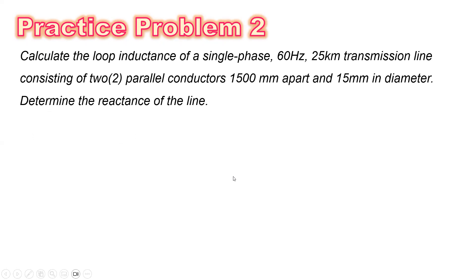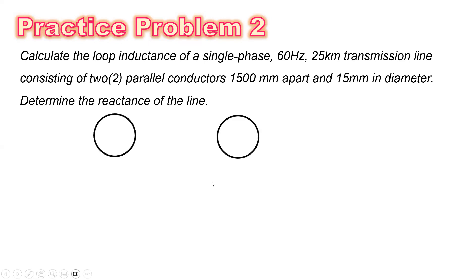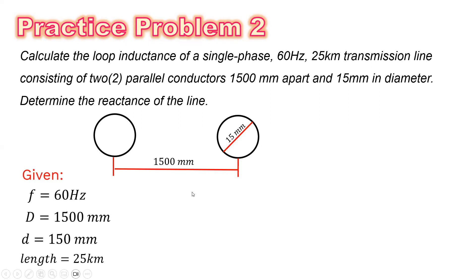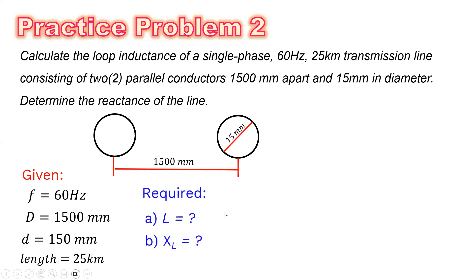For practice problem number two, calculate the loop inductance of a single-phase, 60 Hz, 25 km transmission line consisting of two parallel conductors, 1500 mm apart and 15 mm in diameter. Determine also the reactance of the line. So we have two conductors separated by 1500 mm and the diameter is 15 mm. The frequency is 60 Hz, the distance between the two conductors is 1500 mm, the diameter is 15 mm, and the length of the transmission line is 25 km.